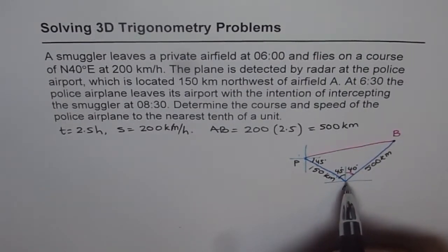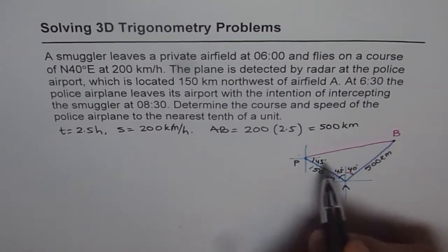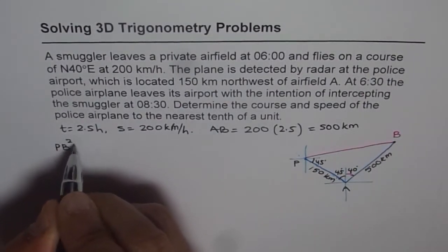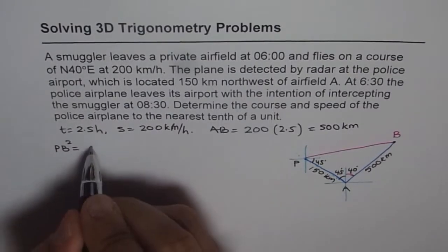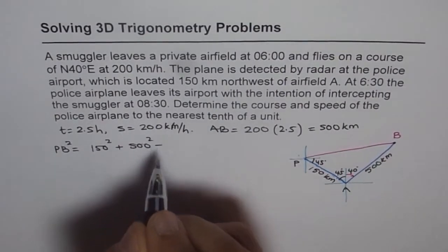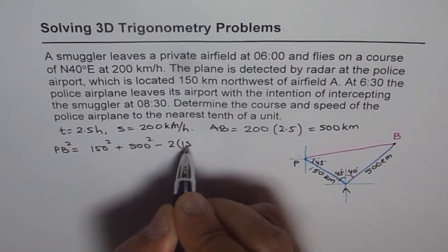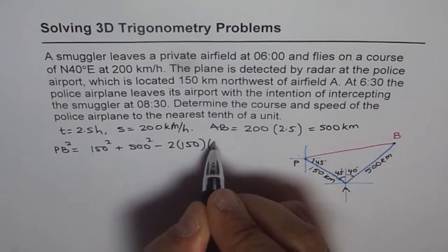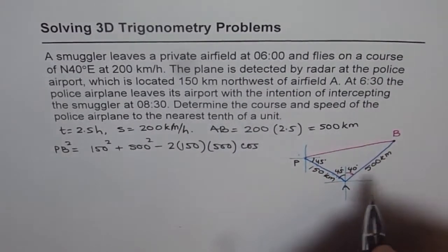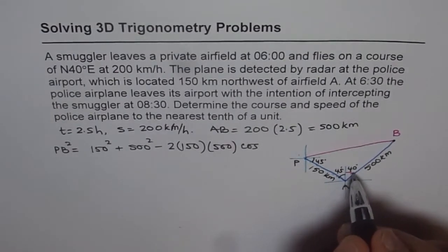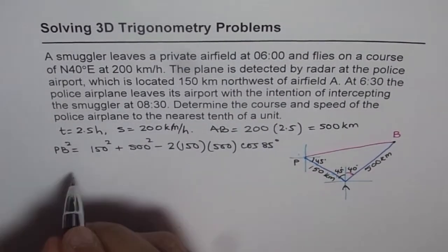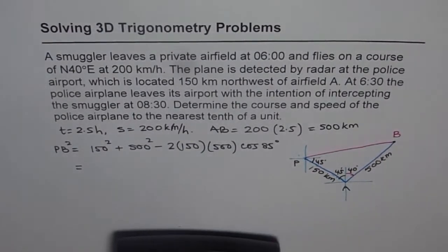Now we have this triangle in which we know 500 kilometers distance between A and B, and between P and A is already given to us as 150 kilometers. Now in this triangle, we know two sides and the included angle. And therefore, we can use cosine law to find the third side, which is PB. We say PB square should be equal to 150 square plus 500 square minus 2 times 150 times 500 times cosine of the angle between them. The angle is 45 plus 40, which is 85.